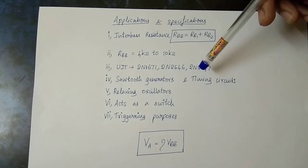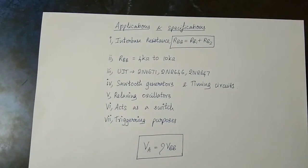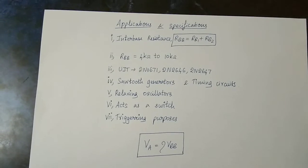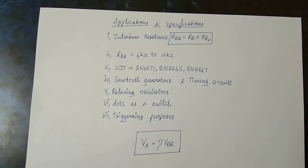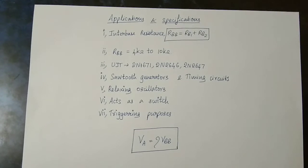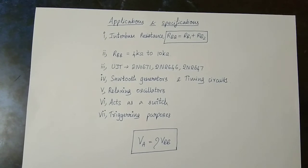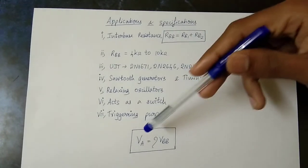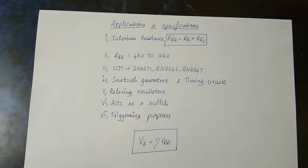You can see the same applications: switching, timing circuit, and triggering circuit. The main application is thyristor triggering — UJT is used to trigger a thyristor. When the UJT first turns on, it acts as a transistor to trigger other devices. Note that UJT is not used for amplification — the main uses are switching applications and triggering pulses. The last key formula is: VA equals eta multiplied by VBB. The eta value is the intrinsic standoff ratio. That is just the substitution equation.